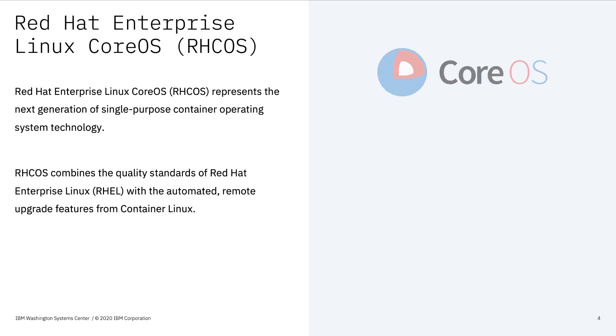OpenShift includes an operating system called Red Hat Enterprise Linux Core OS, and OpenShift supports Crio and Docker container runtimes.